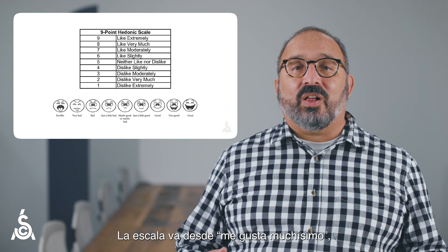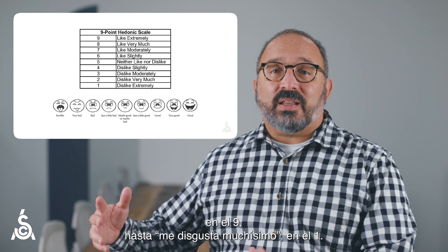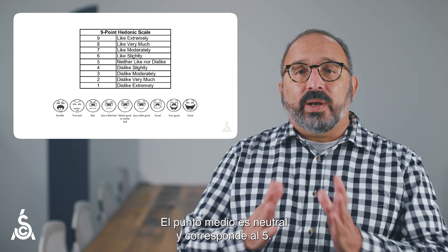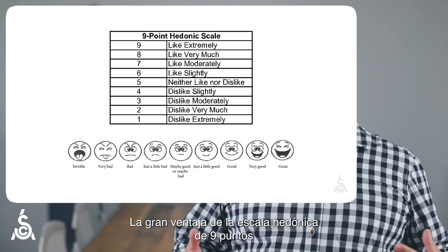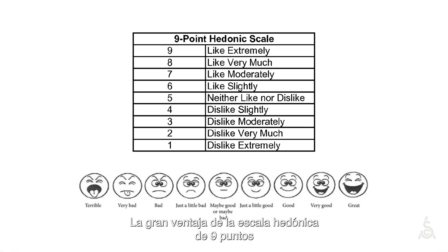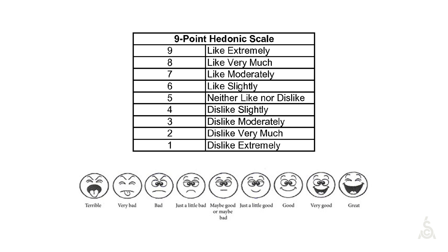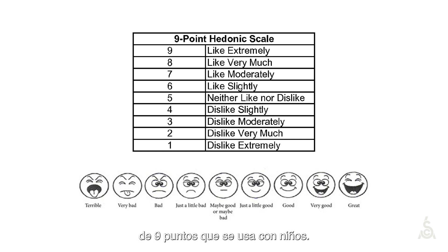This scale goes from 'like extremely,' a 9, to 'dislike extremely,' a 1. The midpoint is neutral and scores a 5. The great thing about the 9-point hedonic scale is that it is easily used in a variety of contexts, even across language barriers. The smiley face scale is a great example of a 9-point hedonic scale used for children.